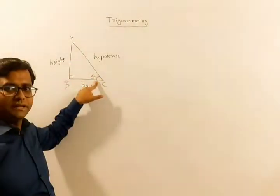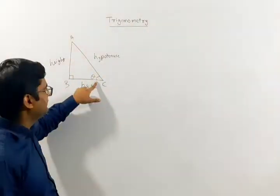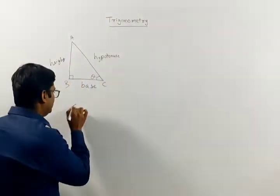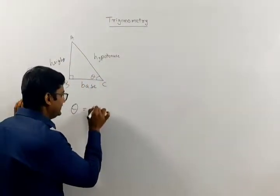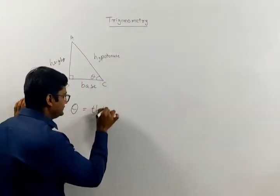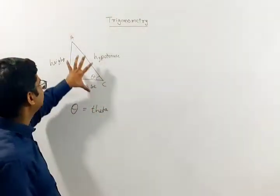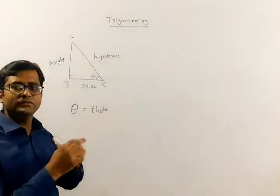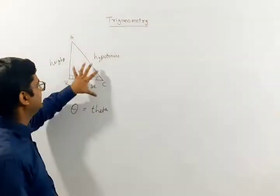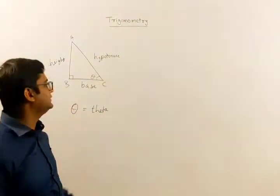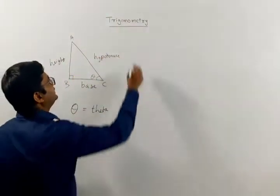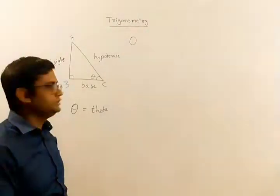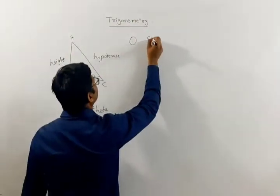Let us consider this particular angle, which we call in general using this symbol — it is called theta. Out of these three sides, we can form ratios of two different sides, and there could be six possible combinations. These combinations are called trigonometric ratios.